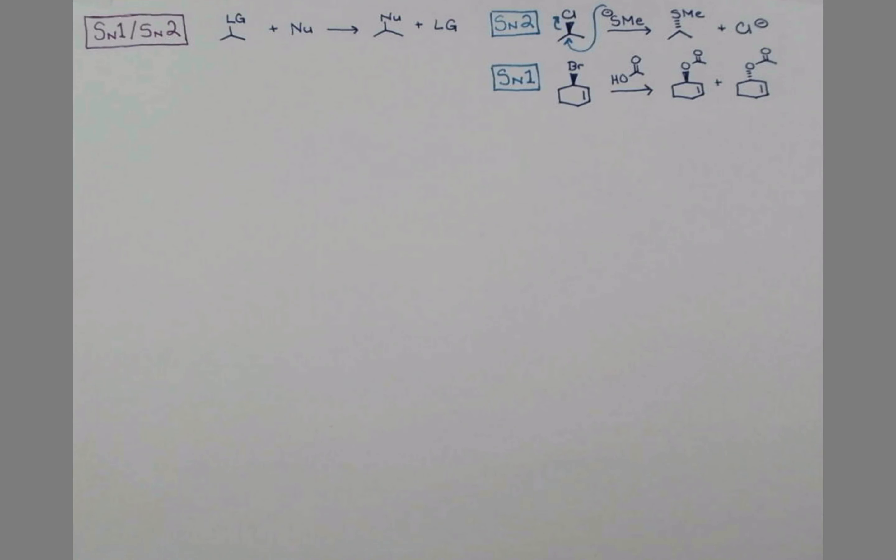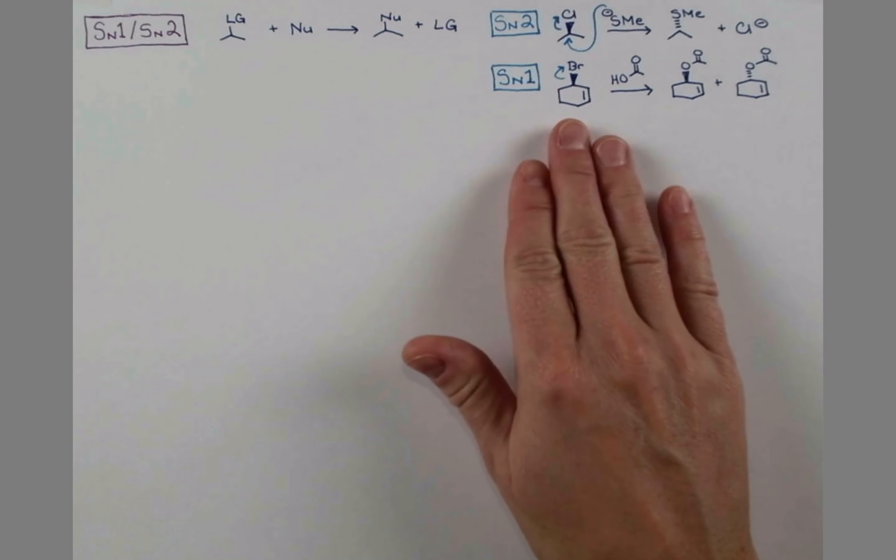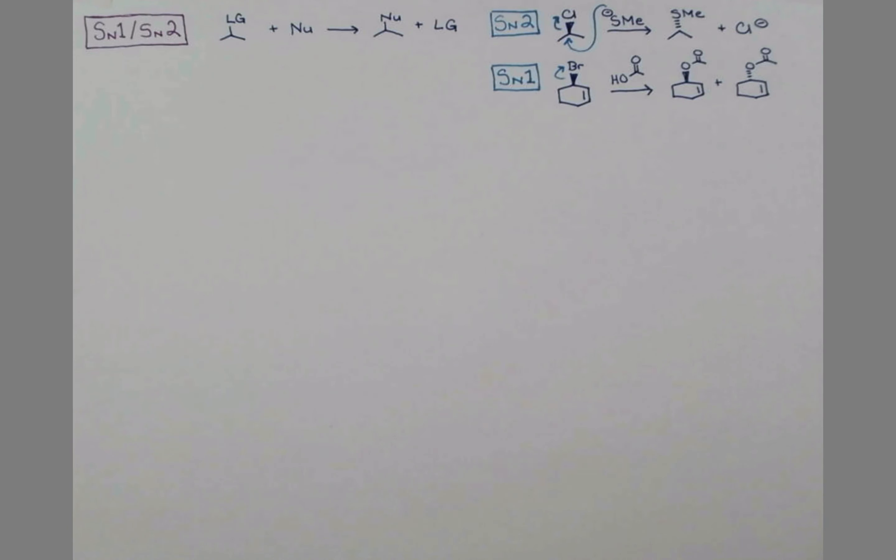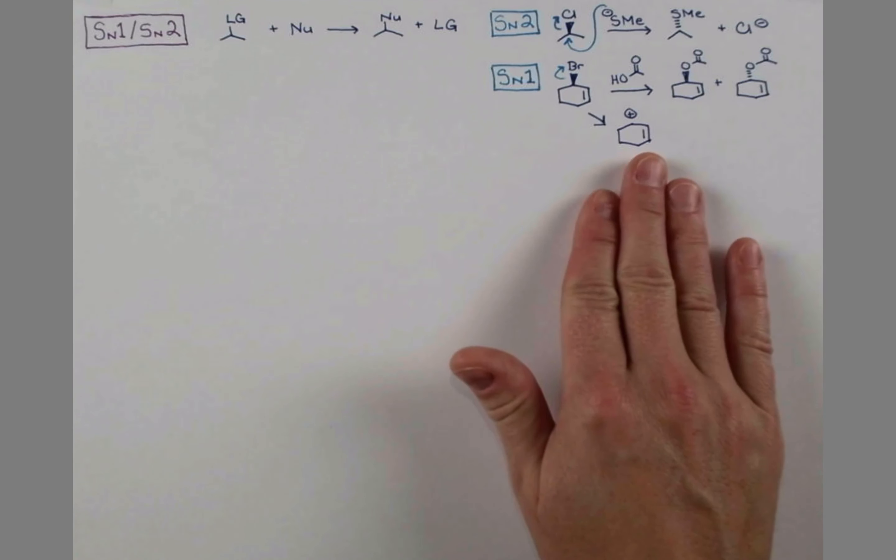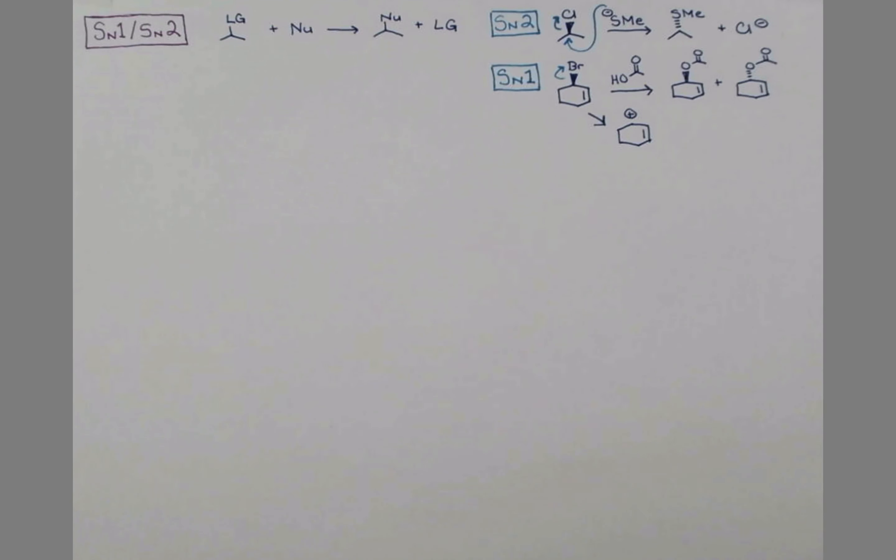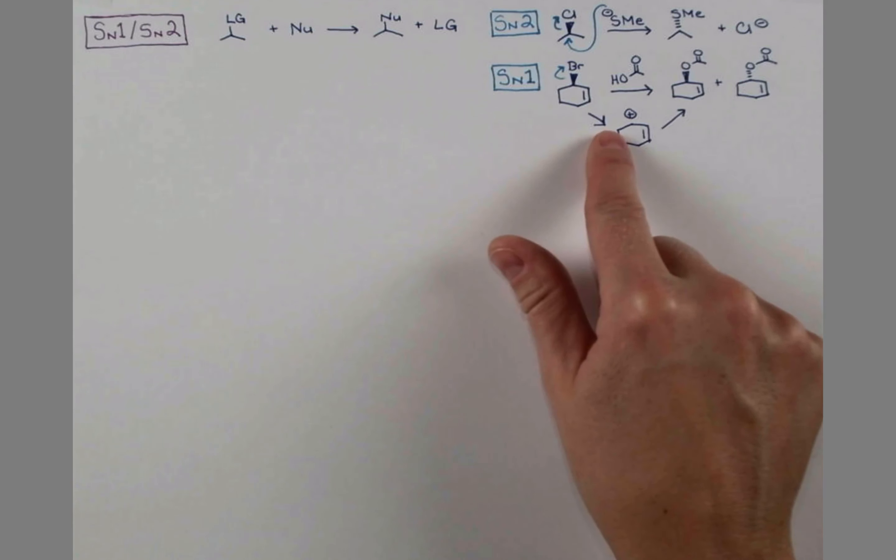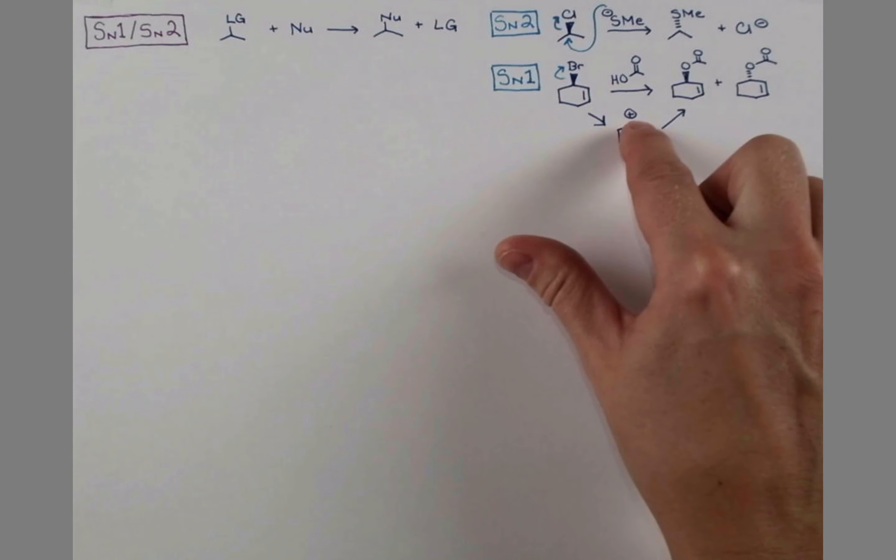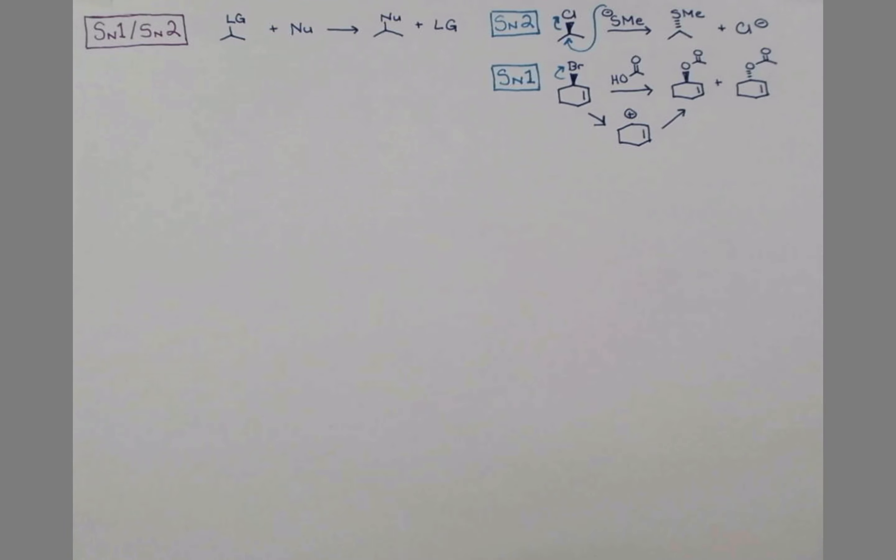Well in this mechanism, the first step is the leaving group leaving on its own. Bromine departs the molecule and that forms an intermediate carbocation. Now only once we get this carbocation forming can the acetic acid or its conjugate base acetate attack and form these products. Carbocations are planar, trigonal planar at this center. And so this can now be attacked from the front face or the back face.